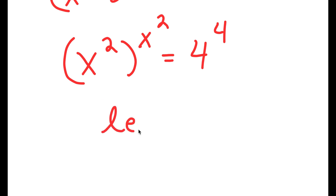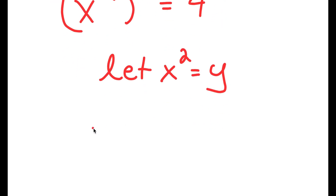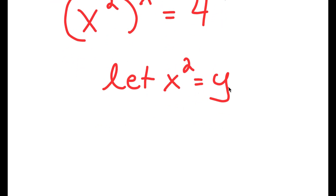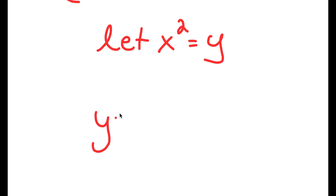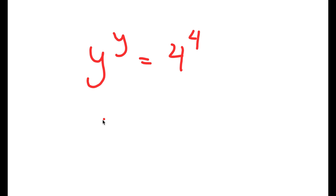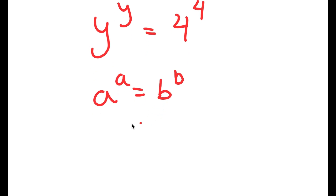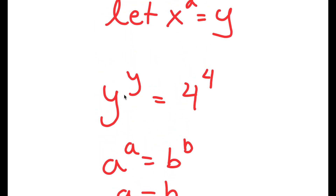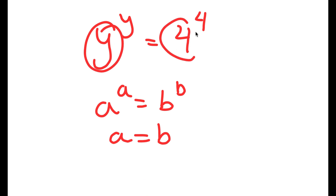From here, I'm going to let x to the power of 2 equal the variable y. So if I replace x to the power of 2 with y, I get y to the power of y is equal to 4 to the power of 4. And if I have something in the form a to the power of a equals b to the power of b, this is the same thing as a equals b. So in this case, y is going to equal 4.